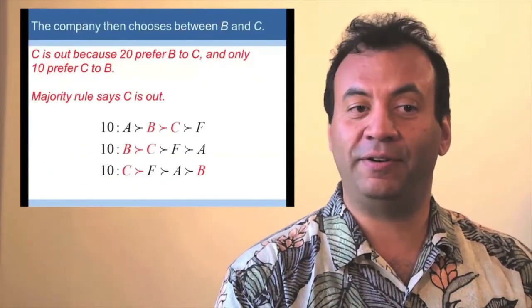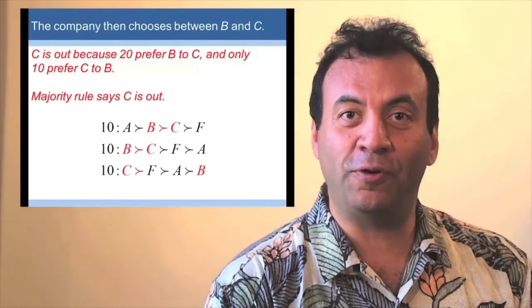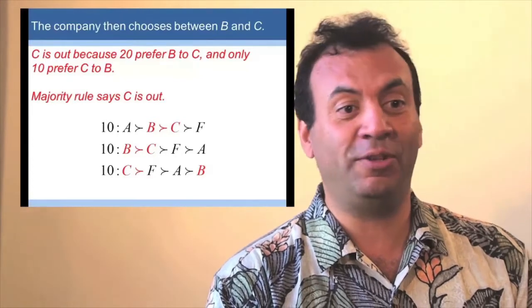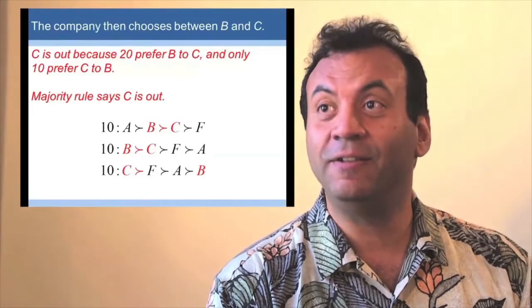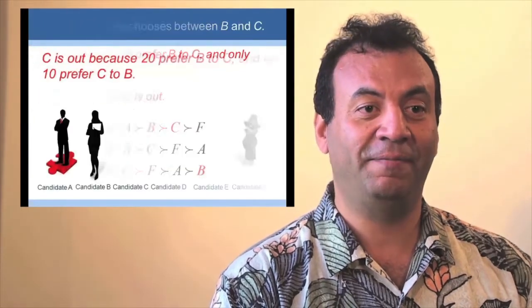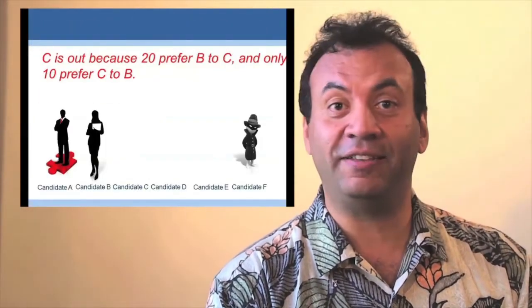Well, we keep going. Notice here, 20 people prefer B to C and 10 prefer C to B. So if we did a majority vote between B and C, guess who will win? Right, it's B. And so now, C is eliminated. We're left with A, B and F.